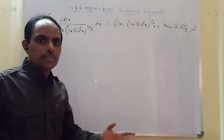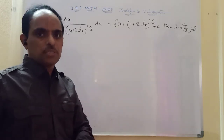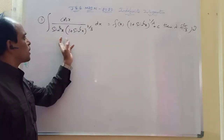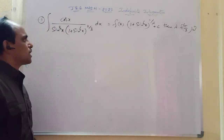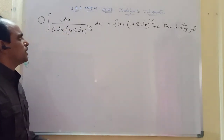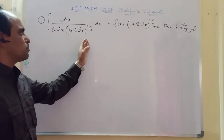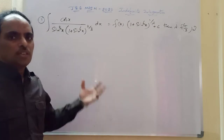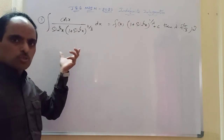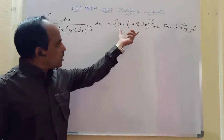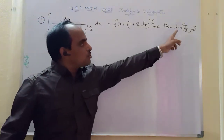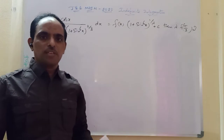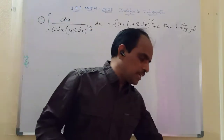The first question from JEE Main 2020 January session: find the integral of cos x divided by sin³x into (1 + sin⁶x) to the power of 2/3. We need to find the value of λ into f(π/3). This is a time-taking process if solved directly.